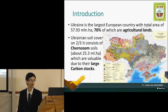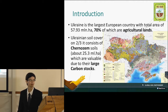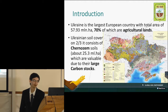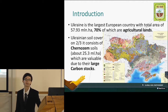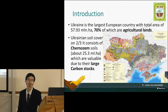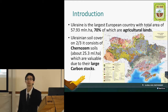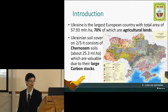Ukraine is the largest European country with a total area of more than 57 million hectares and 70% of this area is occupied by agricultural lands. Ukrainian soil cover on two-thirds consists of Chernozem soils, which are viewed as extremely valuable due to their very high organic carbon stocks.